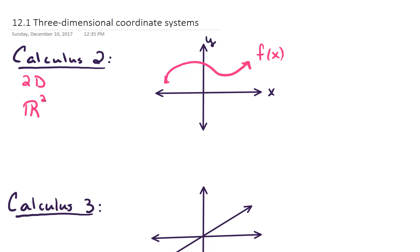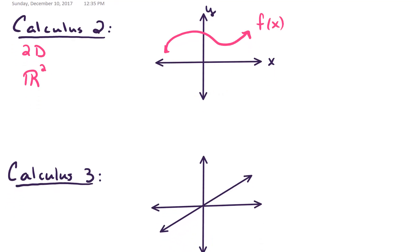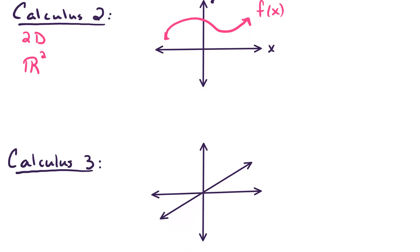In Calc 3, what we're going to be talking about is vectors, multivariable functions, and we're going to be working in three dimensions. So the axis that comes out of the page towards you we will call x. The axis that goes left and right we'll call y. And the axis that goes up and down vertically is what we'll call the z-axis. So that gives us three variables — now we're in 3D. Sometimes we'll call this space R3.